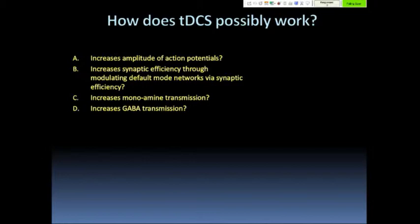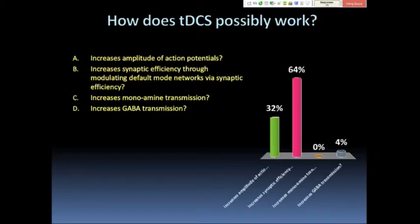So I have some questions for everybody if they get out their clickers. The first question is, how does TDCS possibly work? A, increases the amplitude of action potentials. B, increases synaptic efficiency through modulating default mode networks. C, increases synaptic efficiency. D, increases monoamine transmission. E, increases GABA transmission. Has everybody answered? So I guess polling is open. Now I'm going to see what the answers are. Very good. Everyone got the right answer.